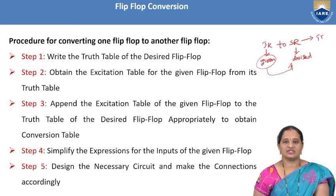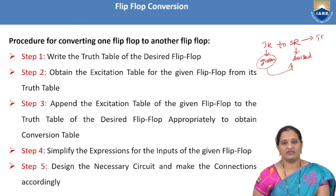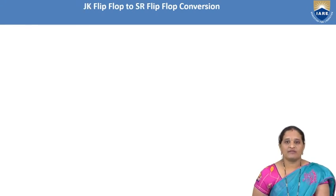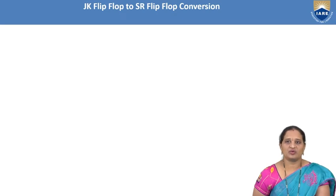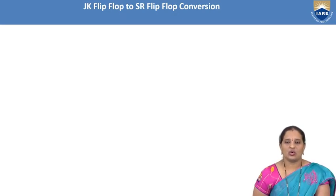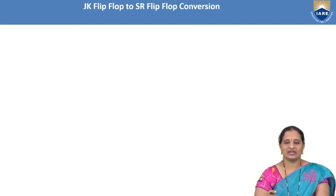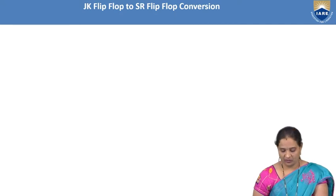Step 5: once the expressions are known, design the necessary circuit and make the connections accordingly. These are the steps for converting one flip-flop to another. Now let us discuss one example: JK flip-flop to SR flip-flop conversion. By following the procedure which we discussed, we will be converting a JK flip-flop into an SR flip-flop.